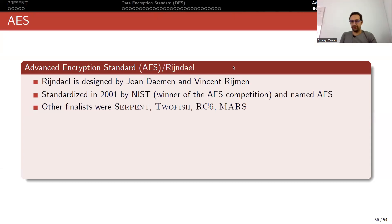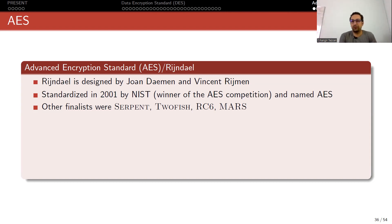First we talked about PRESENT block cipher, a lightweight block cipher, then we talked about DES, which is no longer a standard. Now we want to talk about something we really use. AES is responsible for 99% of every encryption in the world. Everybody is using it currently - Zoom uses AES, WhatsApp uses AES. Let's see how we came up with this algorithm.